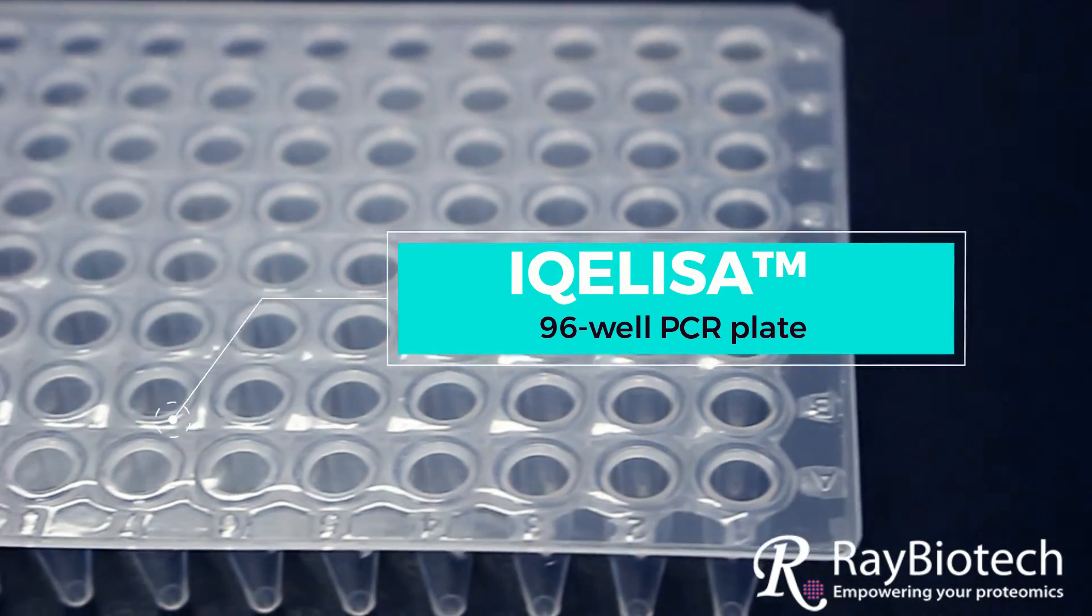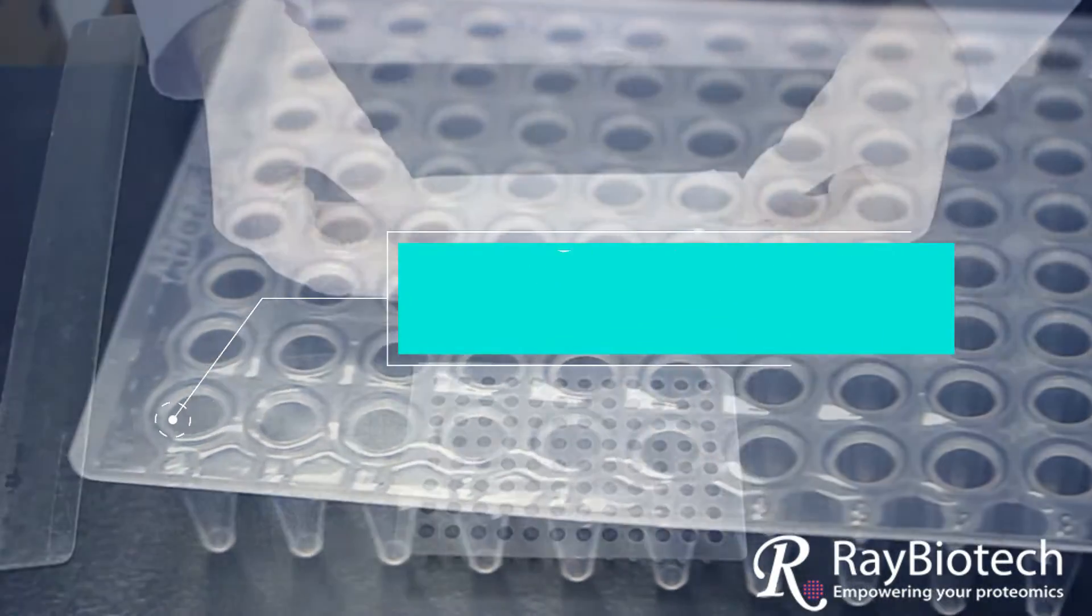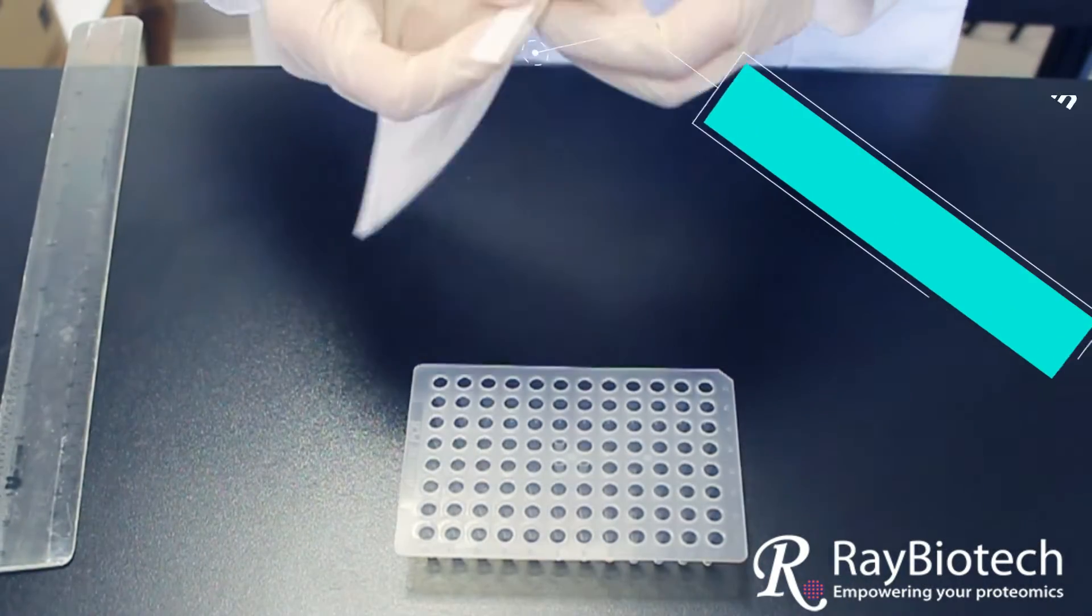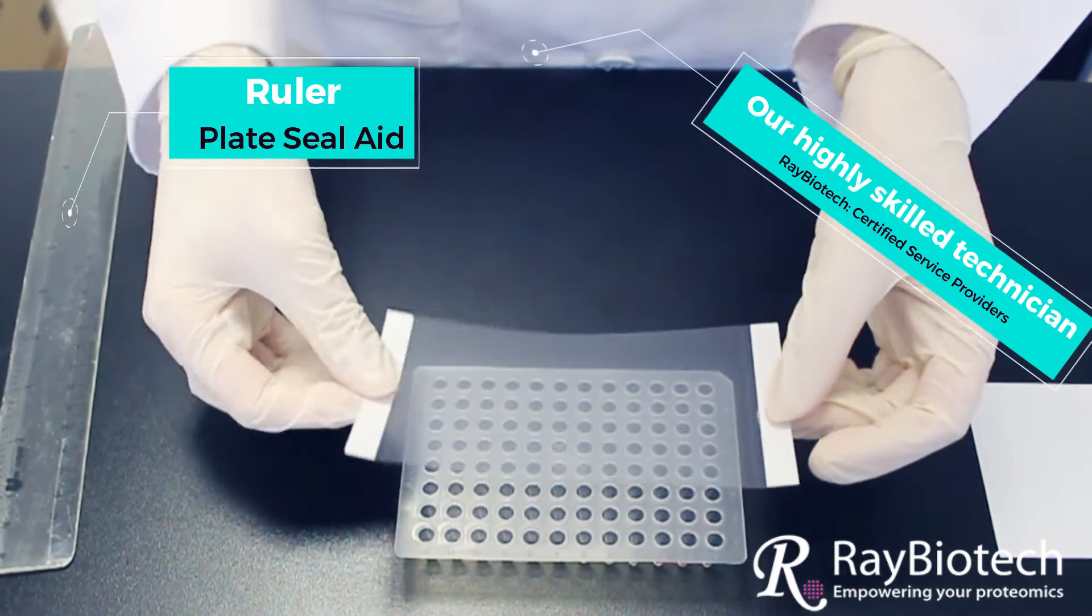The last step on the IQ ELISA is ensuring a proper plate seal. To seal the plate, place the plate film on top of the plate and grab a flat edge. We like to use a thin, lightweight ruler.